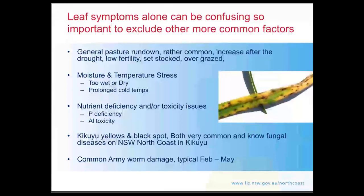Sensitive species in acidic soil situations can present with similar discolouration. If we're talking about kikuyu specifically, kikuyu yellows and black spot are both very common and known fungal diseases of kikuyu on the north coast. When assessing pasture dieback, we go through a process of eliminating all these more common factors to determine whether any of them are implicated in why the pasture is presenting how it is. Another common issue is armyworm — typically present in grass pastures here from February to May — but the difference is armyworm feeds on the grass, so you'll see loss of leaf material rather than discolouration.